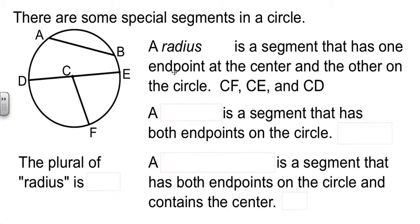And for future reference, you'll hear this term used quite a bit. The plural of radius is radii. That's how you pronounce that, radii. So CF, CE, and CD are all radii of that circle.